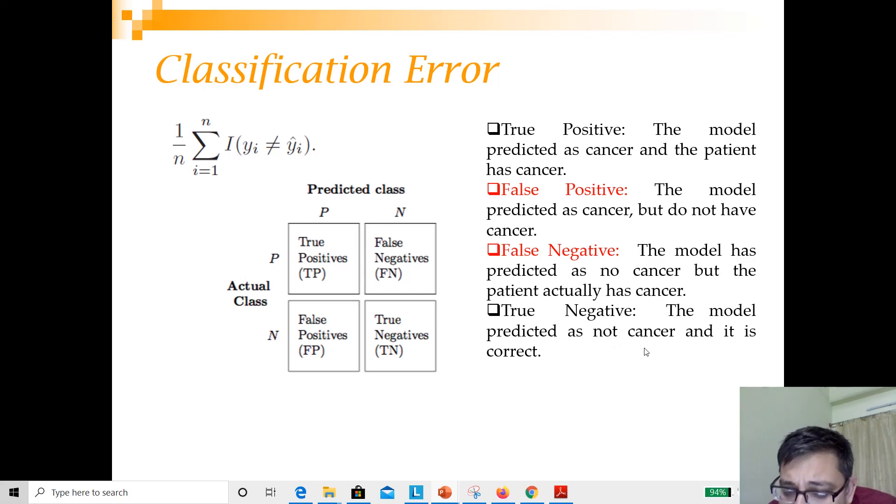You can understand what the ideal behavior of the classifier should be. You want most of the quantities to be accumulated in the principal diagonal - you want true positive and true negative to be maximized. The most baseline way to evaluate a classifier is using classification accuracy, where you have true positive and true negative in the numerator and all observations in the denominator. This is how you evaluate a classifier.